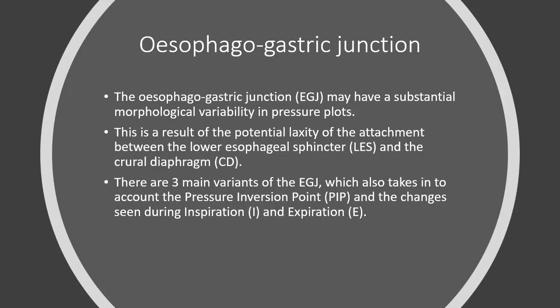The esophagogastric junction may have substantial morphological variability in pressure plots. This is a result of the potential laxity of the attachment between the lower esophageal sphincter and the crural diaphragm.